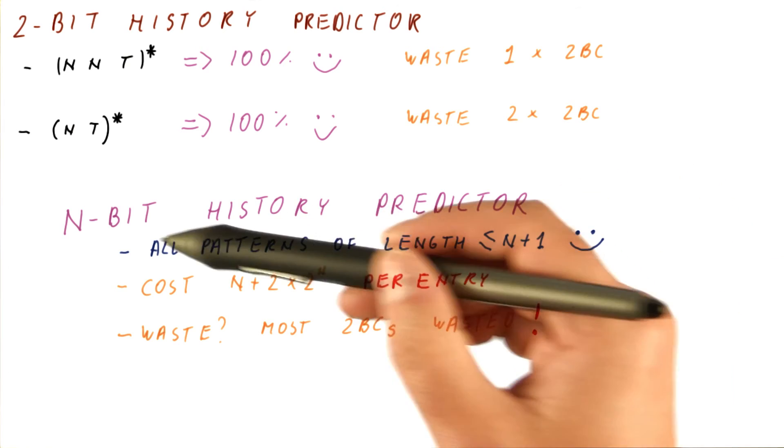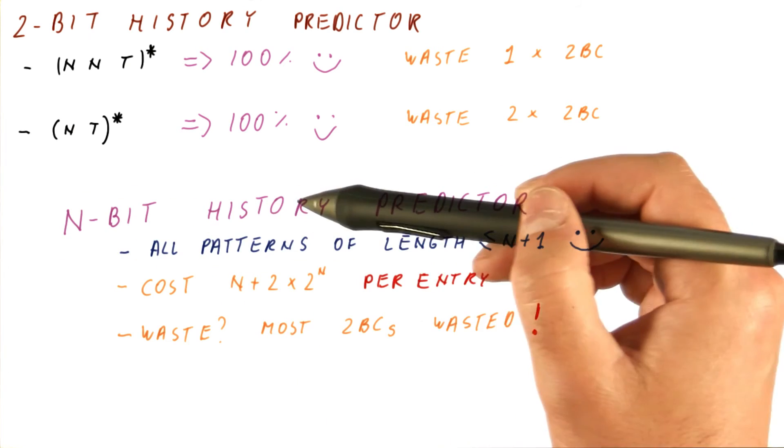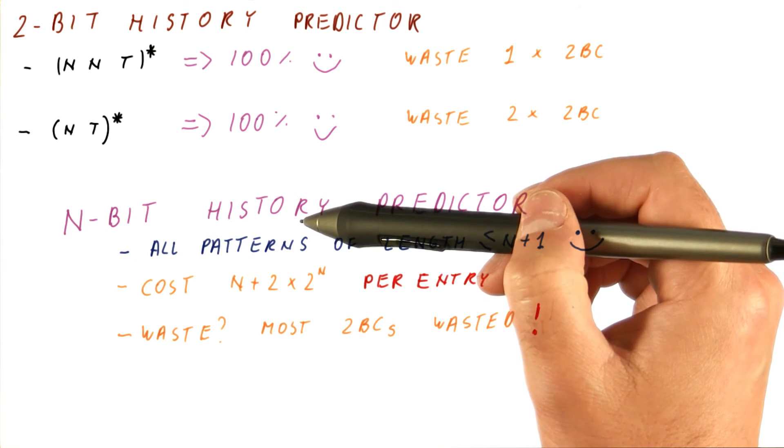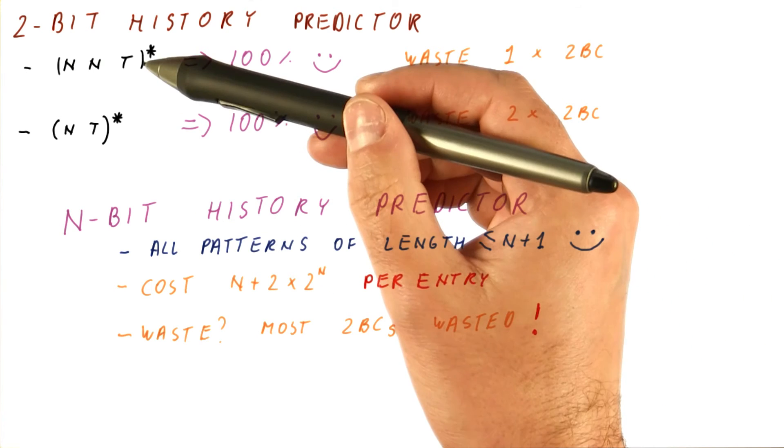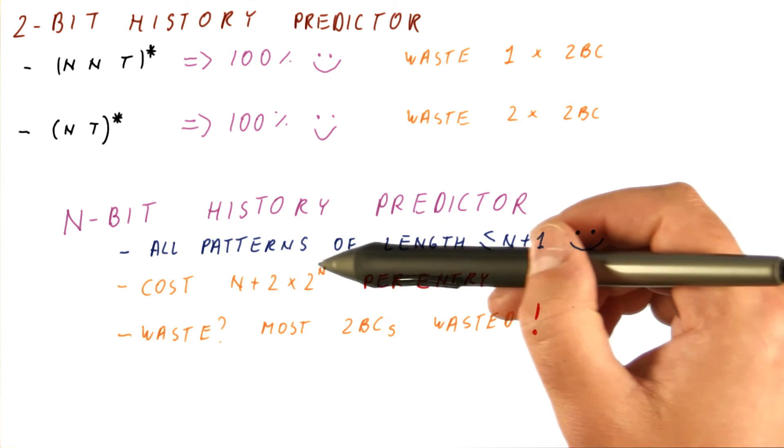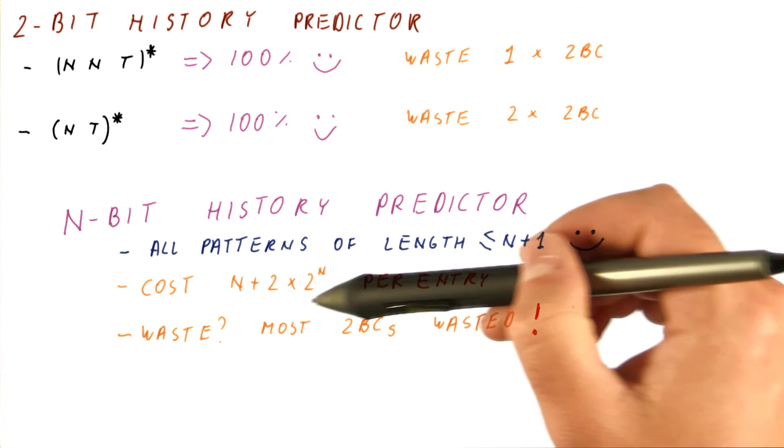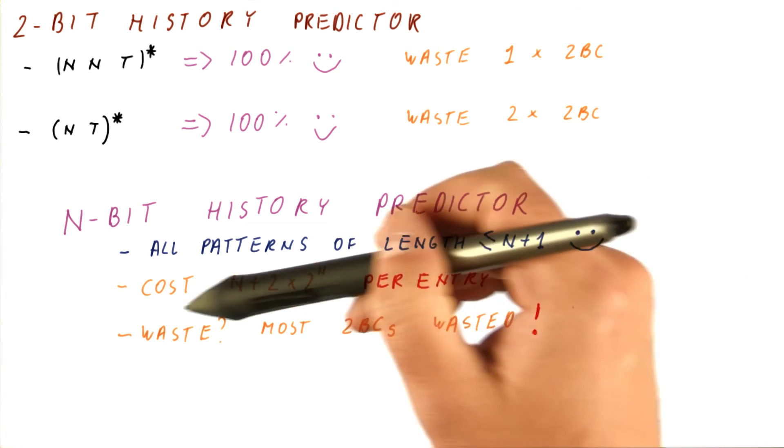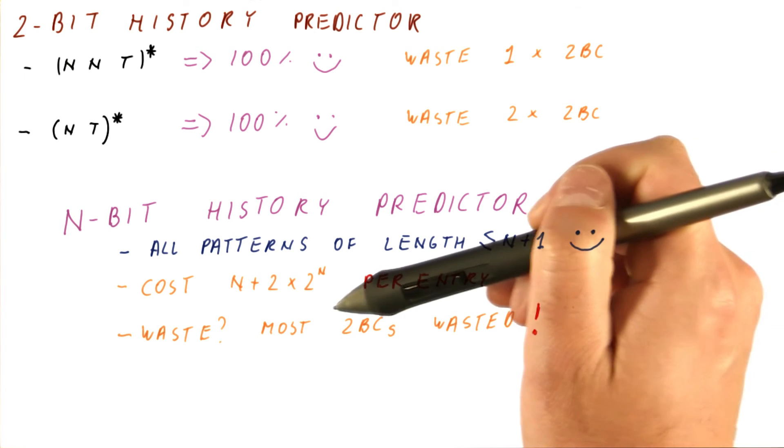So as we can see, by increasing the n here, which is the length of the history, we are improving our ability to predict longer and longer patterns. But our predictor becomes very expensive very quickly. And much of the cost that we are adding is waste.